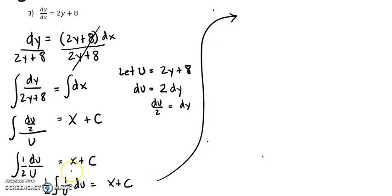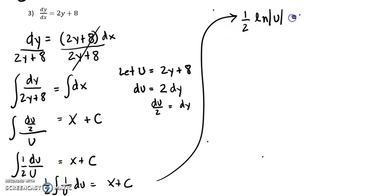The integral of 1 over u — we know that's just ln of u. So we have one-half ln of absolute value of u equals x plus c.